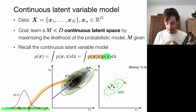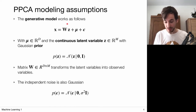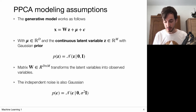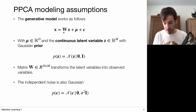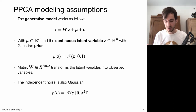Moving to formulas: the generative model has a latent variable mapped through high-dimensional space via a linear model W. This is part of the modeling assumptions — a linear map W together with a bias mu, forming the forward model from latent variable to observation. There is noise associated with each observation.